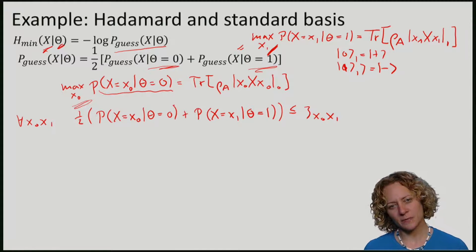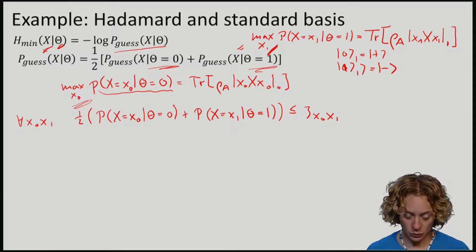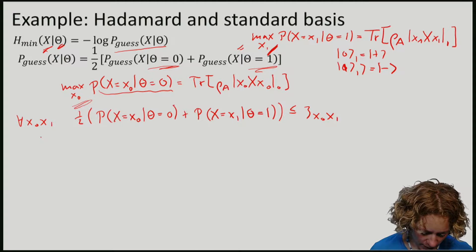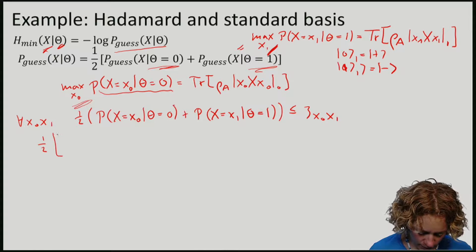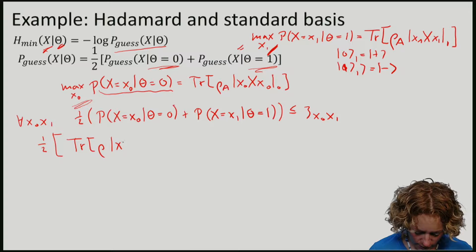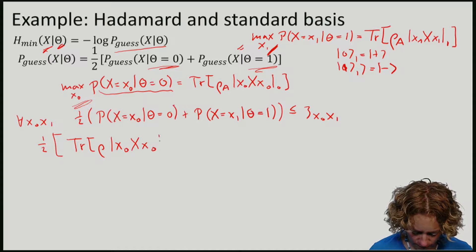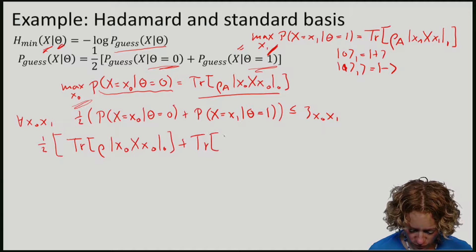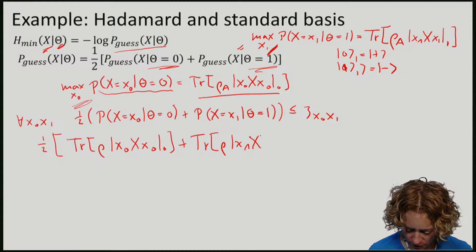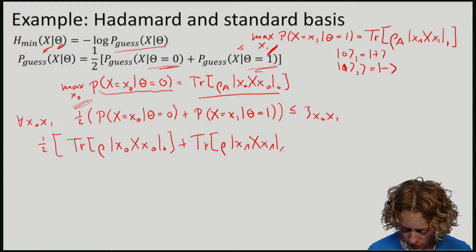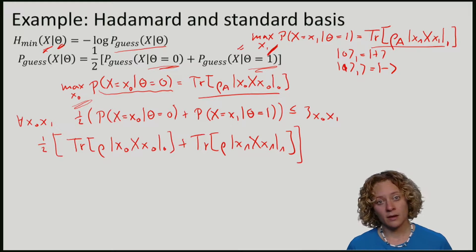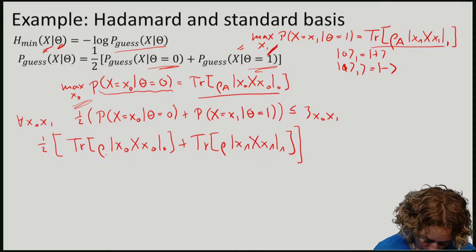So how can we compute these probabilities? So note that if I put this expression in here, what I get is a half of the trace of rho X0 X0 from here, plus the trace of rho 0 X1 X1 from here. So this is rho A.